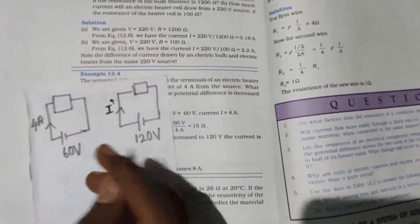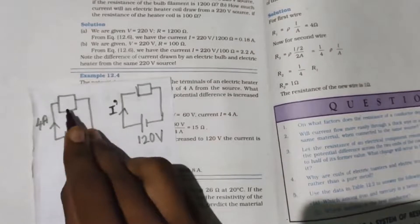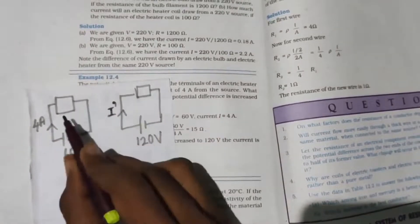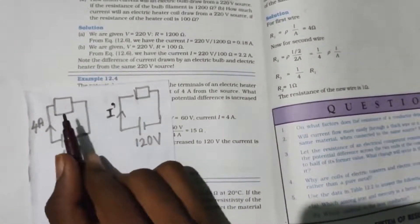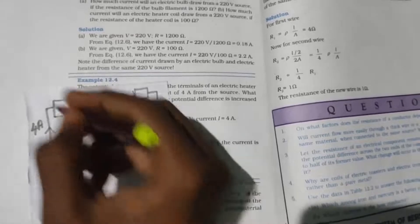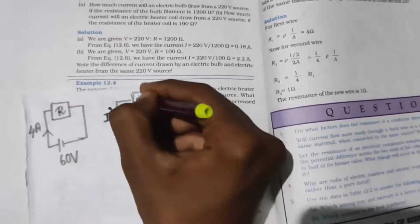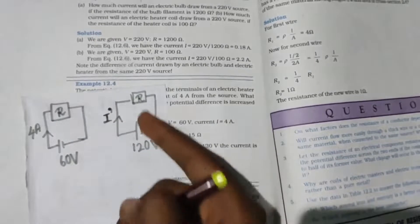The resistance is going to remain the same. We have one electric heater, so the total resistance remains the same. Now we will have I dash equals V dash by R, right?